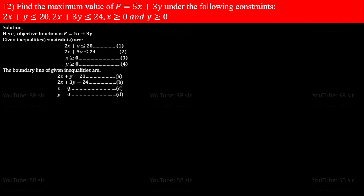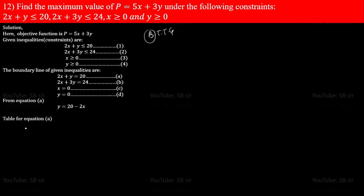We are done with the boundary line step. Now let's make the table — this is the second step of BTTG. For equation A (2x + y = 20), isolate y: y = 20 − 2x. To find the table values, you can use a calculator. Press Mode, then press 7 — there is a table function. Enter the expression 20 − 2X for Y(X).